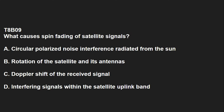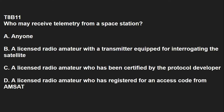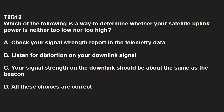T8B09: What causes spin fading of satellite signals? That is the rotation of the satellite and its antennas. T8B10: What is a LEO satellite? A satellite in low Earth orbit — LEO means low Earth orbit. T8B11: Who may receive telemetry from a space station? Anyone. T8B12: Which of the following is a way to determine whether your satellite uplink power is neither too low nor too high? Your signal strength on the downlink should be about the same as the beacon.